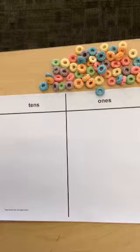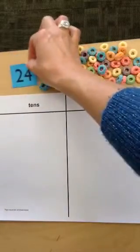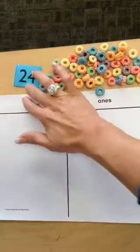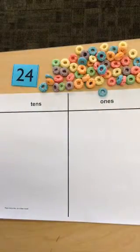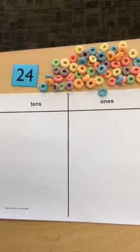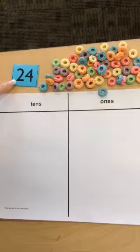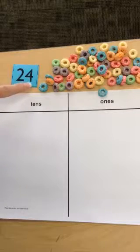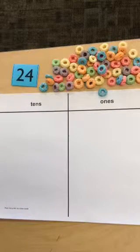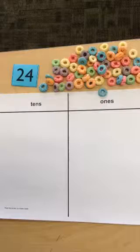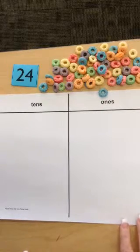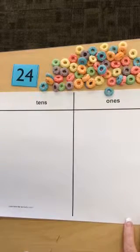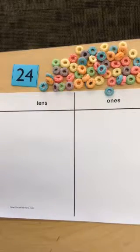I'm going to demonstrate by showing you the number 24. By looking at 24, the 2 tells us that there are 2 groups of 10. The 4 tells us there are 4 ones, or 4 left over. So you're going to use your cereal to build towers to show 24.